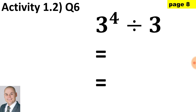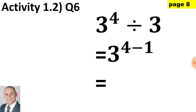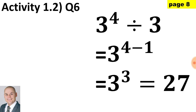Here we have bases that are the same. When dividing bases that are the same we would subtract the exponents. Therefore we would have 3 to the 4 minus 1, which gives us 3 to the 3, which when simplified is 27.